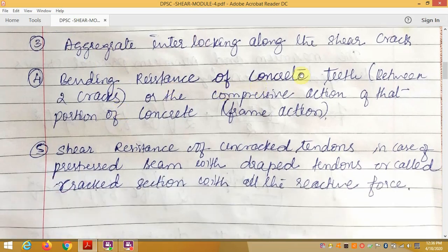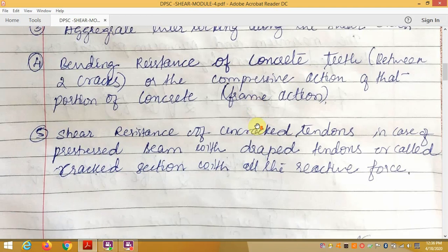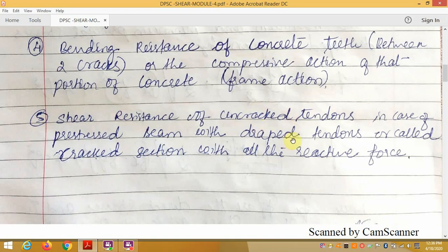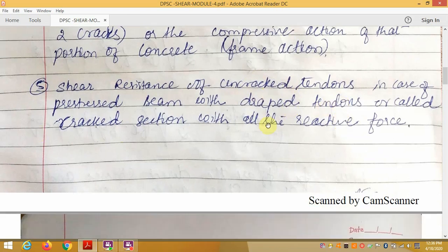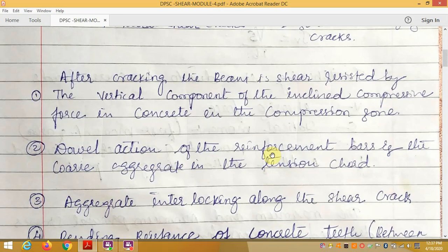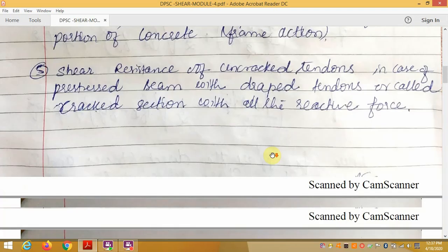Fourth, bending resistance of the concrete teeth, that is between two cracks. That is bending resistance of the concrete teeth or the compressive action of the portion of the concrete. That is frame action. Fifth, shear resistance of the uncracked tendon in case of pre-stressed concrete with bonded tendon or called as cracked section with all the reactive forces. These are the five parameters which control the shear cracking in the beam.